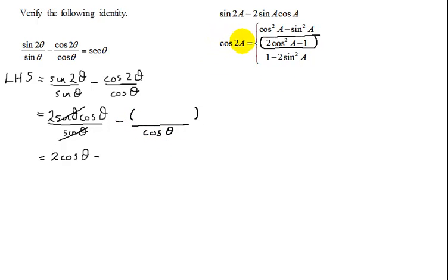So the cosine of 2a is 2 cosine squared theta minus 1.